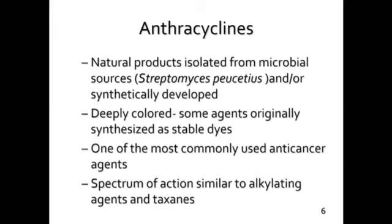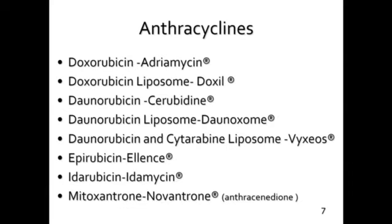Jumping in — the anthracyclines are natural products isolated from microbial sources. They're deeply colored; one of the original nicknames for doxorubicin was 'red death,' so for the most part these are red-colored drugs. They're one of the most commonly used anti-cancer agents with a broad spectrum of activity. We have several liposomal forms of doxorubicin and daunorubicin, a combination product called Vyxeos which we'll discuss, and mitoxantrone is placed in this class even though technically it's not an anthracycline.